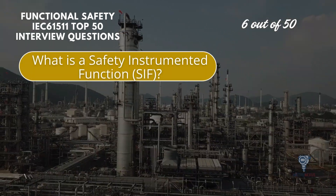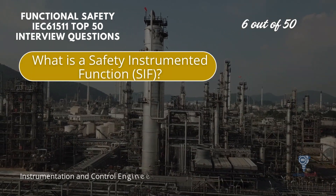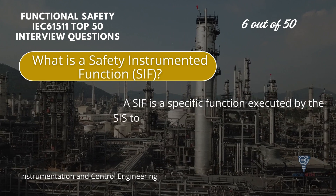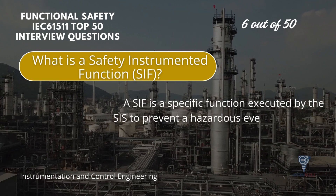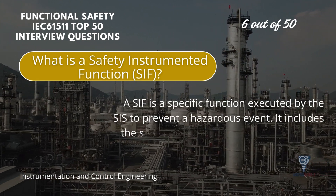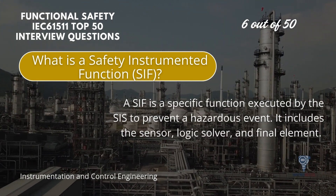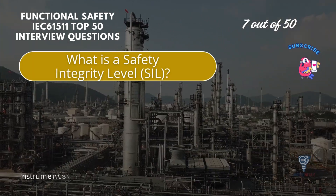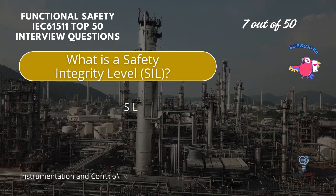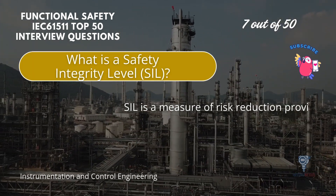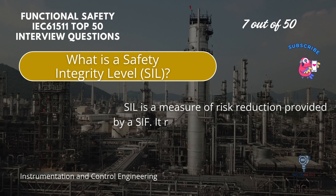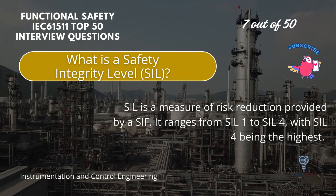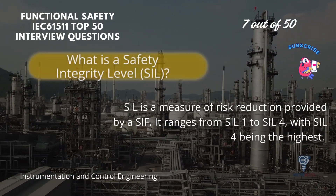What is a safety instrumented function, or SIF? A SIF is a specific function executed by the SIS to prevent a hazardous event. It includes the sensor, logic solver, and final element. What is a safety integrity level? SIL is a measure of risk reduction provided by a SIF. It ranges from SIL 1 to SIL 4, with SIL 4 being the highest.